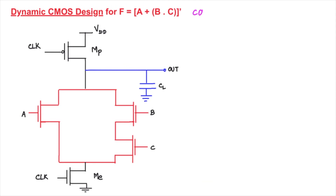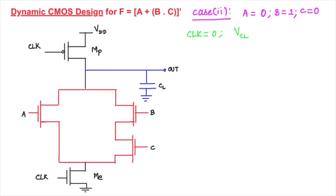For Case 2, consider a = 0, b = 1, c = 0. With clock = 0, VCL is pre-charged to VDD. The evaluation transistor Me remains off, so substitution of values cannot be done and the output capacitance stores the pre-charged value VDD.